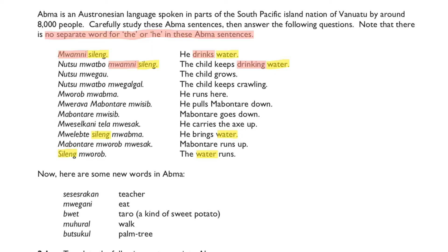Given that the question says there is no separate word for 'the' or 'he' in those APMA sentences, we can infer from the first sentence that one of 'muamni' and 'silang' will be water, and the other means 'drank.' To find out, I looked at other sentences for hints. I highlighted the English word 'water' in all of the sentences, and all of the corresponding APMA sentences have the word 'silang.' Therefore, silang equals water, and accordingly, muamni means 'drank.'